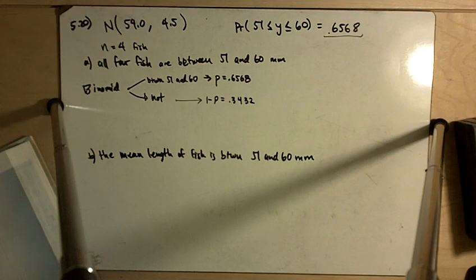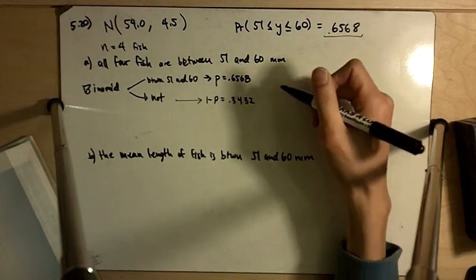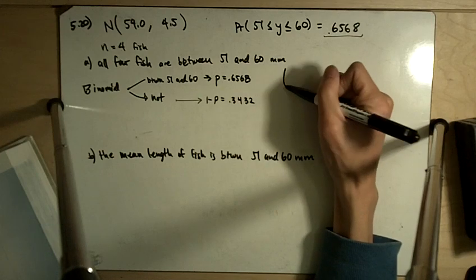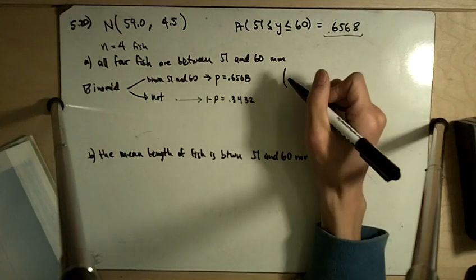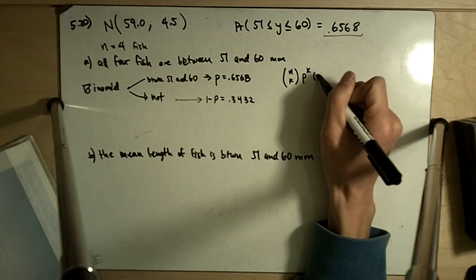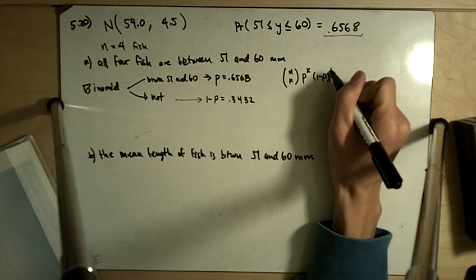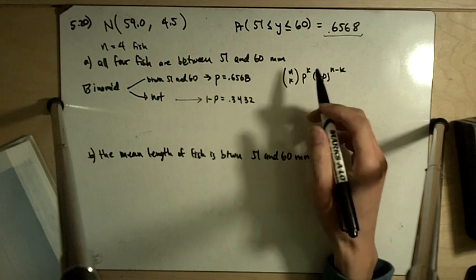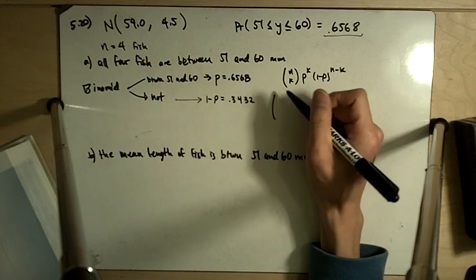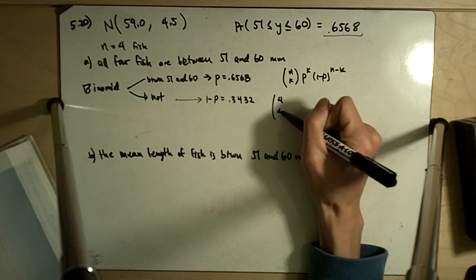So here we've got binomial, which means n choose k. So we've got n choose k, P to the k times 1 minus P to the n minus k. So in this case, out of 4 fish, we want all 4 to be between this length. So we've got 4 choose 4.